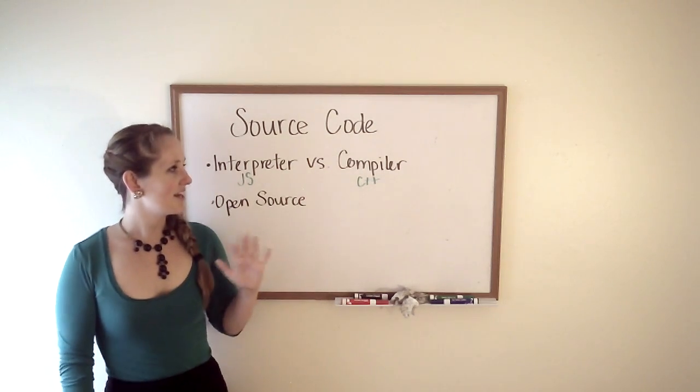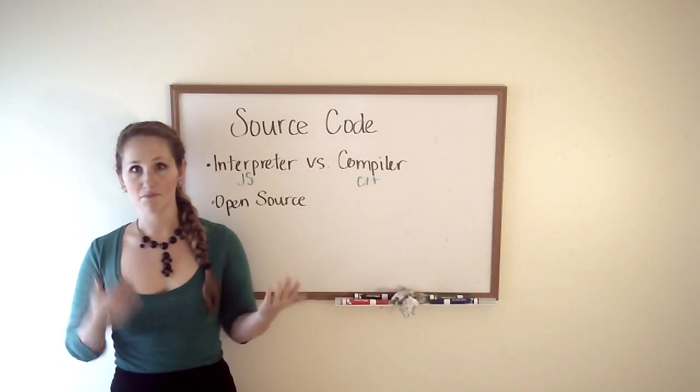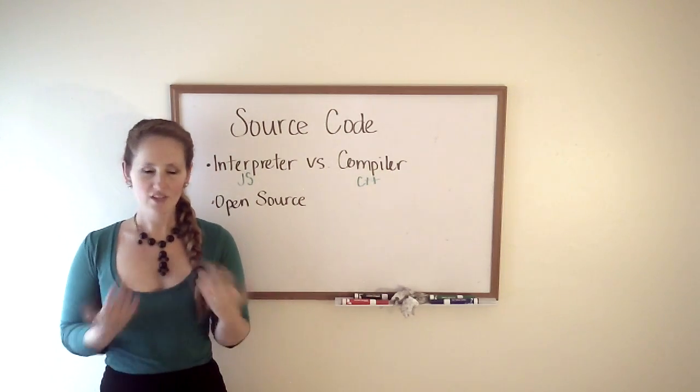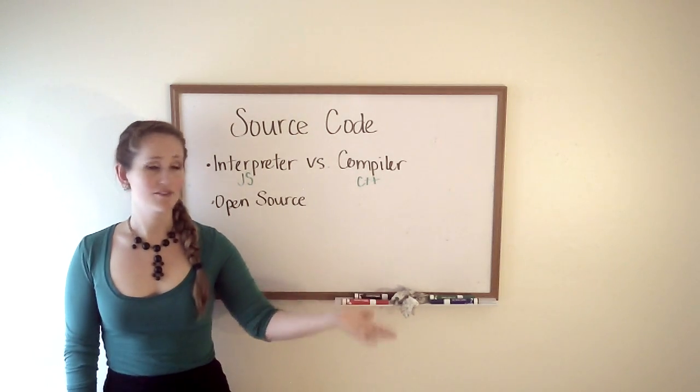The one thing that is kind of an unspoken rule with open source is if you're going to take something and improve it for yourself, even if it's a piece of software that you can download, generally you want to give that back to the community. Give that improvement to everyone else so that they can use it too.